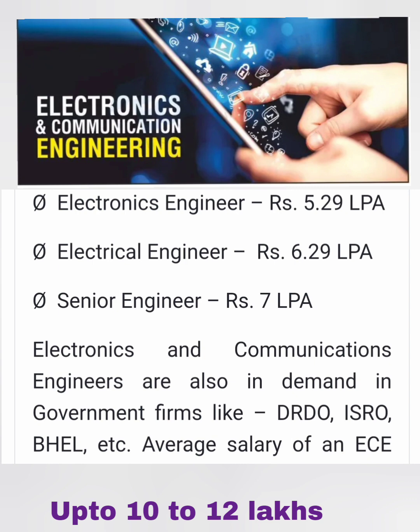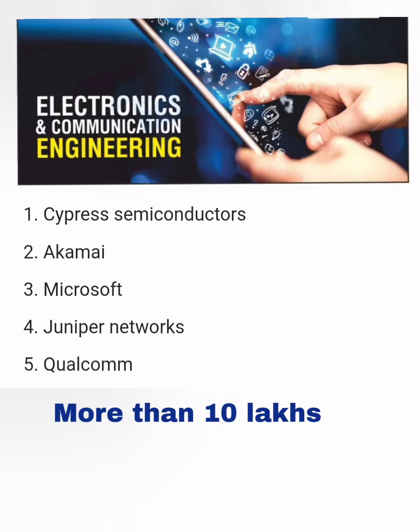You can get a minimum of 1 lakh rupees per month in government companies as well. In product companies like Cypress Semiconductor, Akamai, Juniper Networks, Qualcomm, Microsoft, and Broadcom, you can get salaries of more than 10 lakhs, ranging between 10 to 20 lakhs. Those are the companies you should target. There are good opportunities in electronics and you should definitely consider this field. Thanks for watching — please subscribe to the channel to get similar important updates.